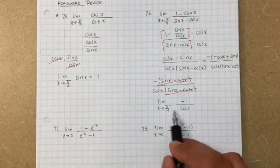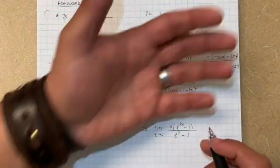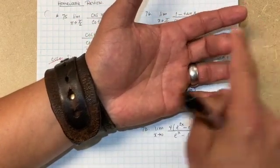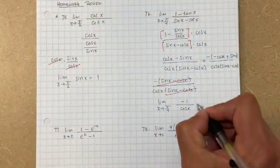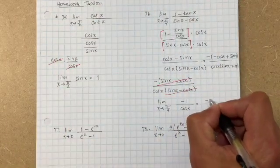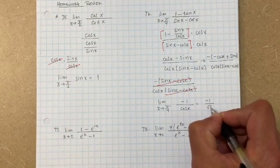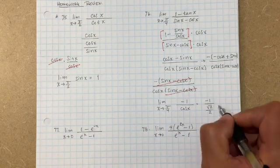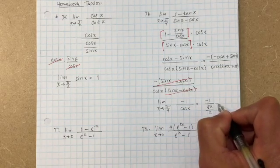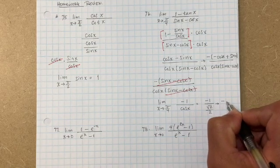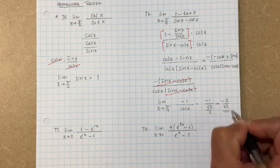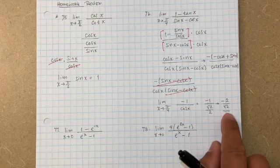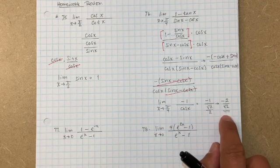Now we can go ahead and plug in pi over 4. Cosine of pi over 4 — think of the unit circle, the top two fingers — that's square root of 2 over 2. So the answer is negative one over (square root of 2 over 2), which ends up being negative 2 over radical 2. I'll just leave it like that because I ran out of room, but you can rationalize it and you know how to do that.